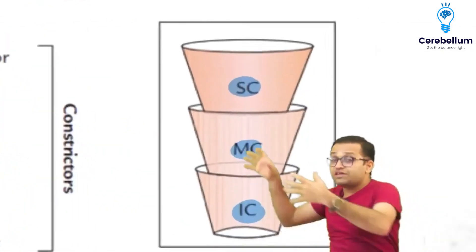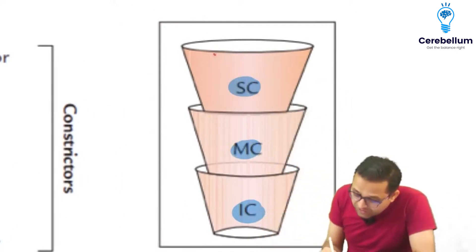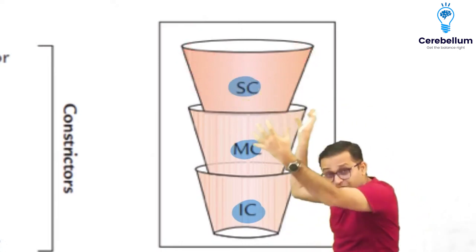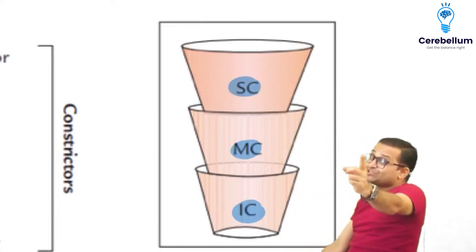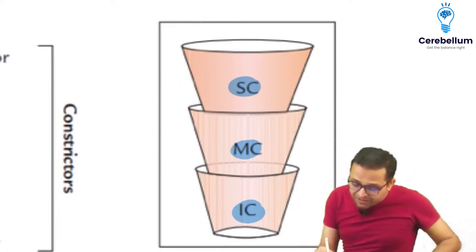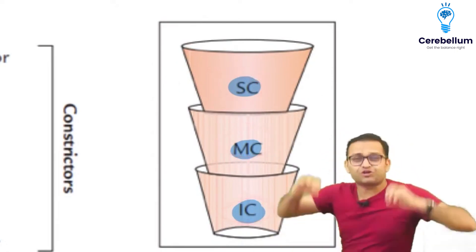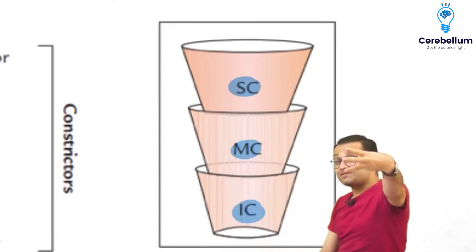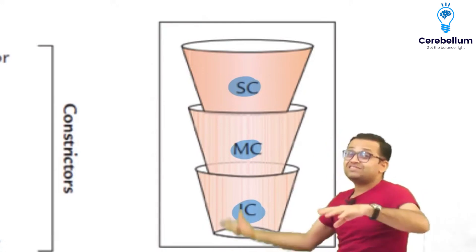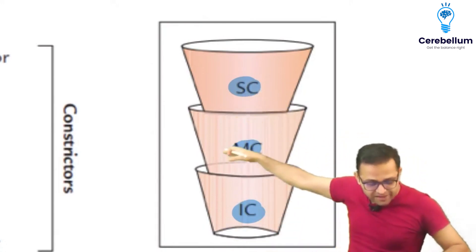These muscles are rounded. When they contract, they cause a narrowing of the pharynx — that is why they are called constrictors. There are three constrictor muscles: superior, middle, and inferior constrictor. They are three circular muscles arranged like one pot inside another. Don't forget — very easy to remember.